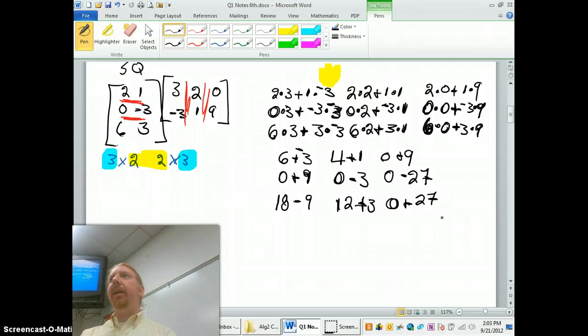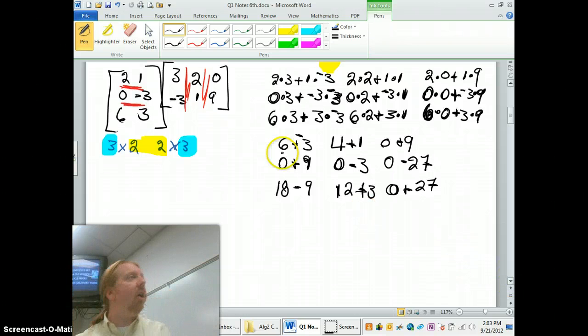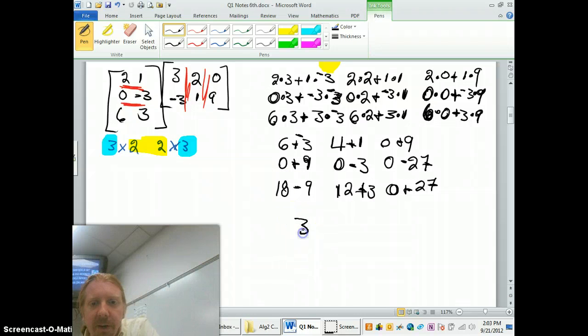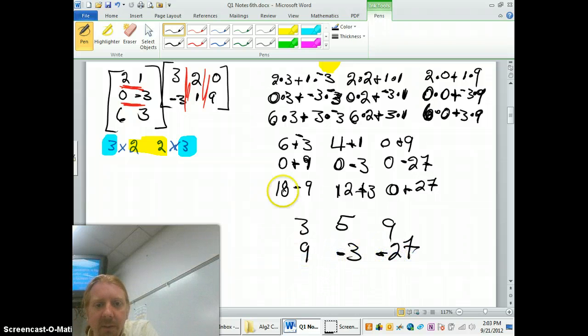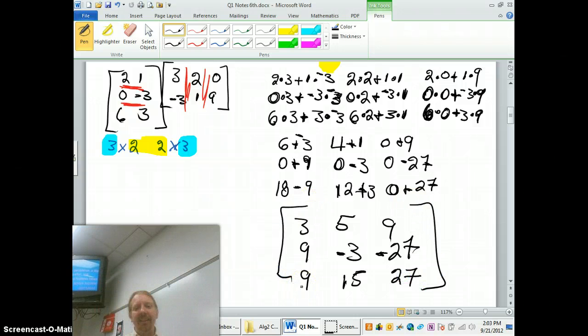Now I can finally combine them all. And again, I'm taking my time with this extra step so you guys can see how this all evolves. So now I have 3, 5, 9, 9, negative 3, negative 27, gosh, 9, 15, and positive 27. There you go. Now what's nice about this 2 is, again, I have a 3 by 3. It's what I predicted.